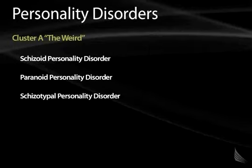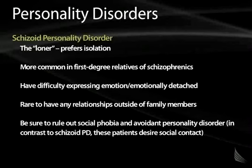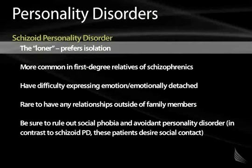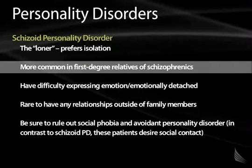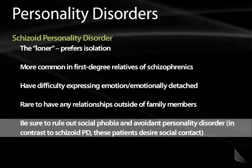Schizoid personality disorder is very characteristic. These people like to be alone — they don't want friends or family around. They have difficulty expressing emotion and are emotionally detached. They frequently have first-degree relatives with schizophrenia. Rule out social phobia and avoidant personality disorder; the key difference is that schizoid individuals do not want to make friendships, whereas those with social phobia or avoidant PD do want closeness.